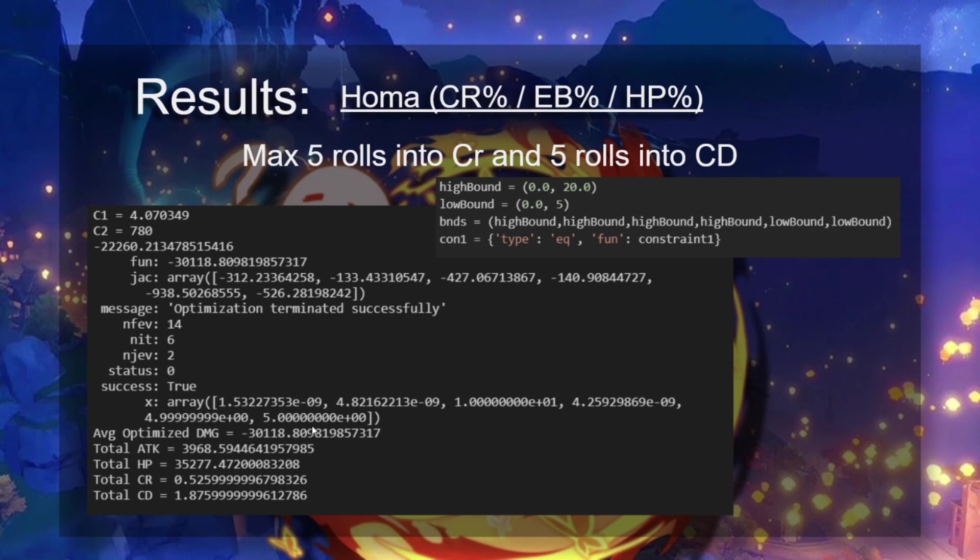What do we see occur? We see that basically here in the rolls it maxes out the crit rate rolls and maxes out the crit damage rolls both at five. Then, the remaining 10 it has to choose between attack, flat attack, HP percent and flat HP. And we can see that it puts all of them into HP percent. And the average optimized damage is 30,000 damage which is about 4,000 damage lower than when you do have your crit rate and crit damage optimized stats. We can see because it was capped on the crit rate and the crit damage it couldn't balance them out perfectly. We get stuck at 50% crit rate and then a lot of crit damage. So what this shows basically is that after crit rate and crit damage the next stat that you do want to be going for is HP percent.